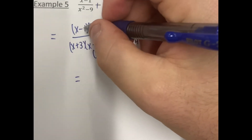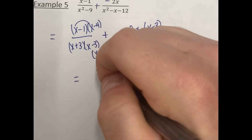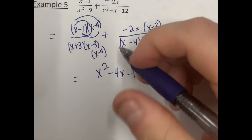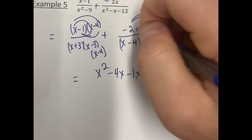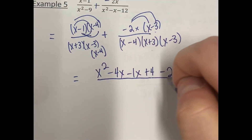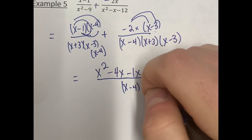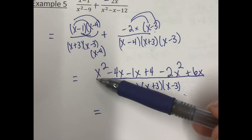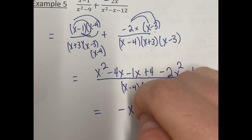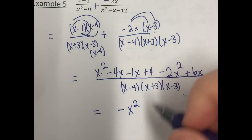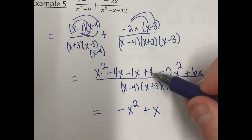We can multiply the numerators together using FOIL. x times x is x squared; x times negative 4 is negative 4x; negative 1 times x is negative x; and negative 1 times negative 4 is positive 4. Writing this as one big fraction, we distribute the negative 2x: negative 2x times x is negative 2x squared, and negative 2x times 3 is positive 6x. All over the common denominator x minus 4 times x plus 3 times x minus 3. Combining like terms: x squared and negative 2x squared gives negative x squared; negative 4x and negative x gives negative 5x; plus 6x gives positive x.